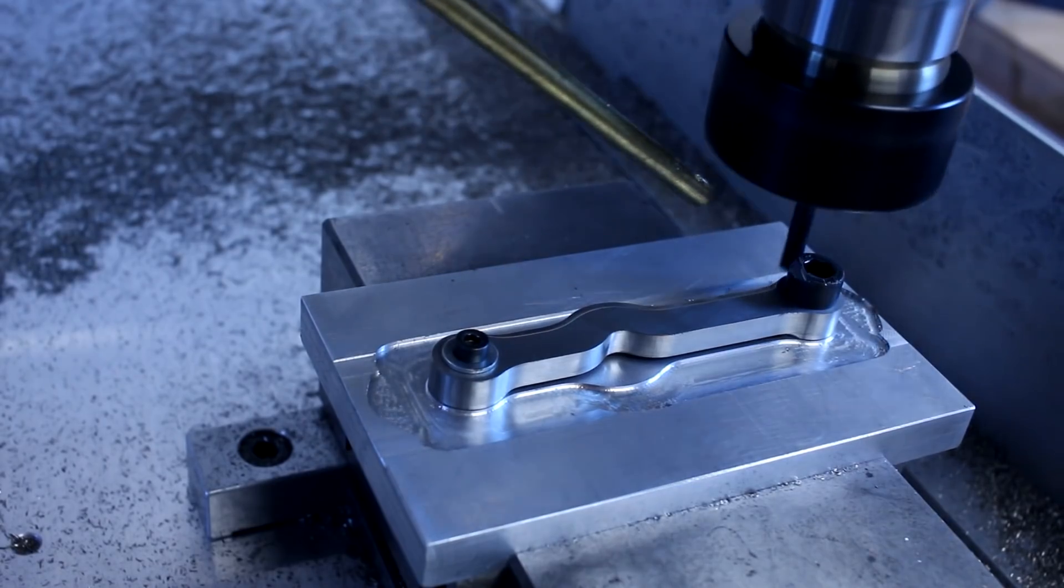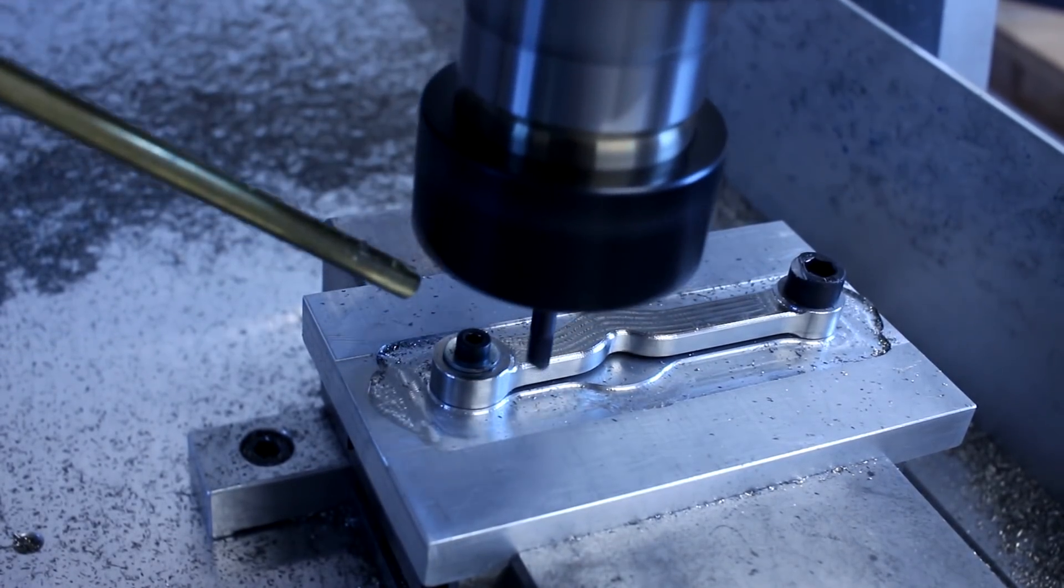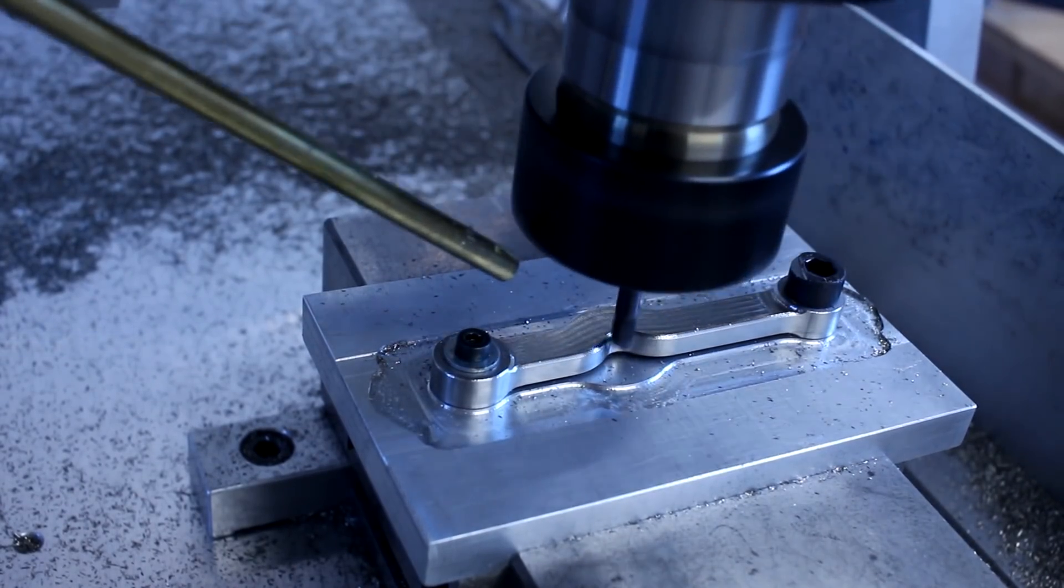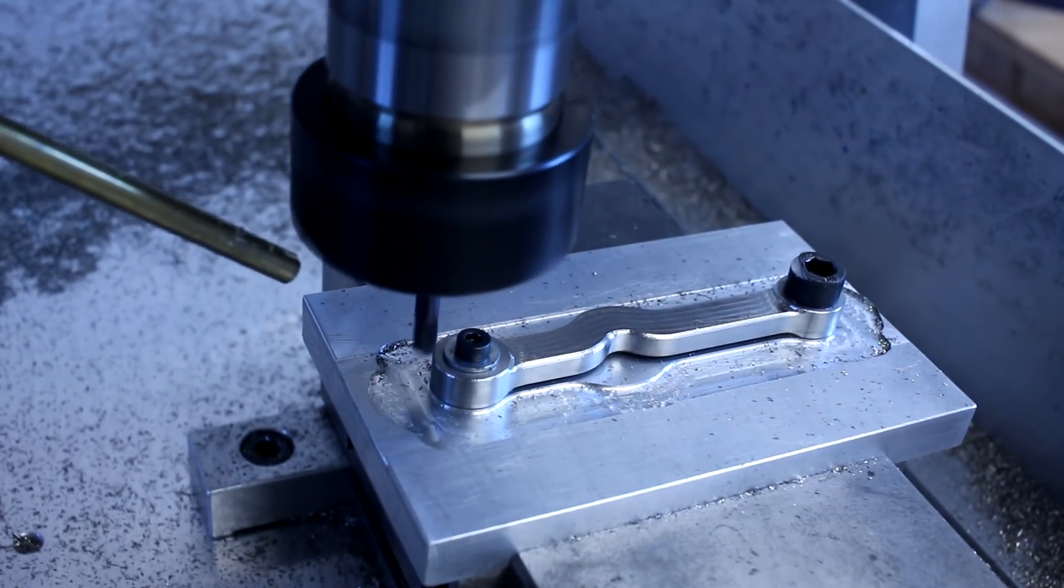For the second side, we can use exactly the same fixture just with the part flipped around. You can see now the bend in the part is facing the other direction.